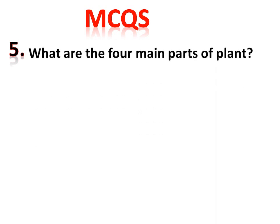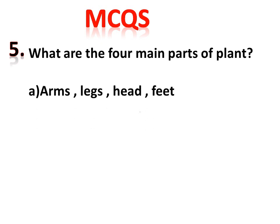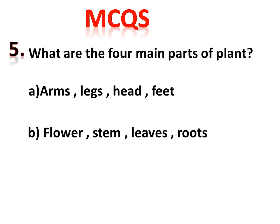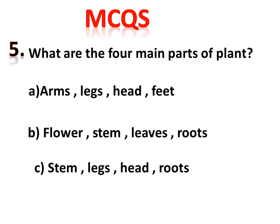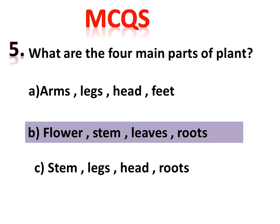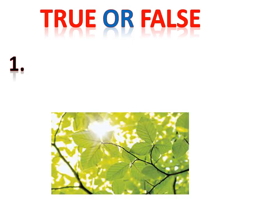MCQ number five: what are the four main parts of a plant? Option A is arms, legs, hat, and feet. Option B is flower, stem, leaves, and roots. Option C is stem, legs, head, and roots. The correct answer is option B — flower, stem, leaves, and roots.